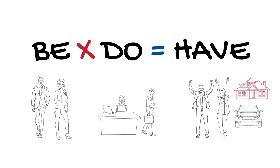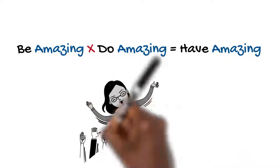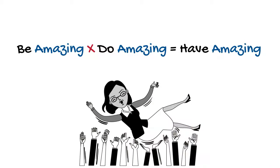You know, the formula's pretty simple. Be, who you are, times do, the work that gets done, equals what you have, your dreams and goals, or if you work it backwards the other way around, if you want to have average, all you have to do is do average and be average. I know that's not what you're after.